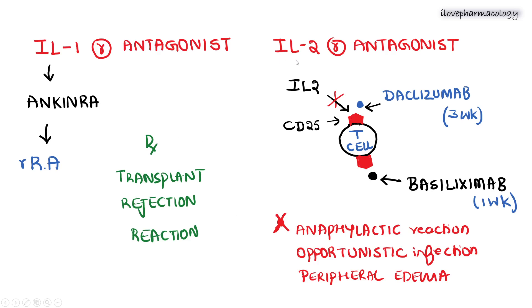The interleukin-2 receptor antagonists are daclizumab and basiliximab. The plasma half-life of daclizumab is three weeks, whereas basiliximab is one week. Both of these drugs inhibit interleukin-2 binding to the CD25 receptor located on the surface of T-cells.